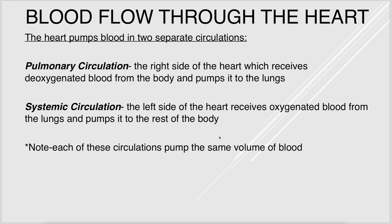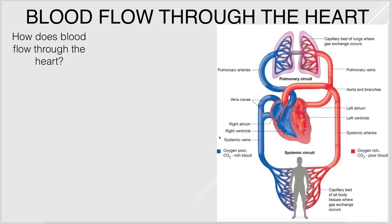The heart pumps in two separate circulations because the right and left sides are separate. The right side pumps into the pulmonary circulation — it receives deoxygenated blood from the body and pumps it to the lungs to get reoxygenated. The left side receives oxygenated blood from the lungs and pumps it to the body. They pump the same volume of blood, otherwise blood would accumulate somewhere. Blood flow: right atrium → tricuspid valve → right ventricle → pulmonic valve → pulmonary trunk → pulmonary arteries → lungs → pulmonary veins → left atrium → mitral valve → left ventricle → aortic valve → aorta → body.